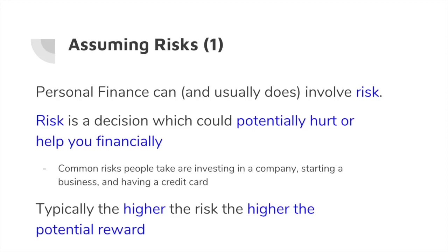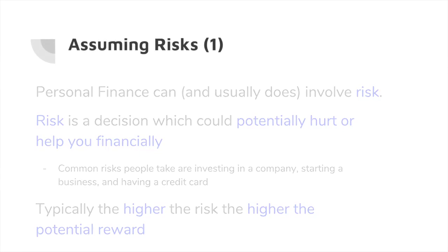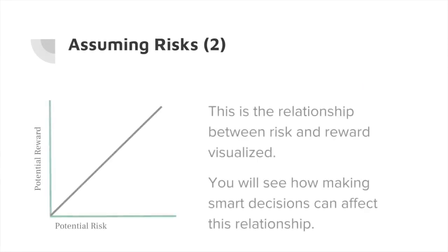Typically, the relationship you'll have in personal finance is that the higher the risk, the higher the potential reward you're going to obtain from that risk. Let's look at the relationship graph here. As you can see, the higher the line goes, the higher the risk and the higher the reward.